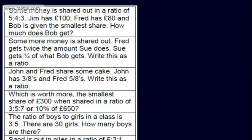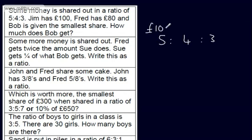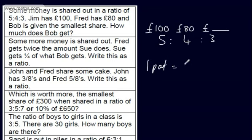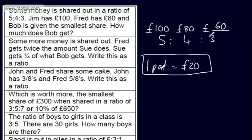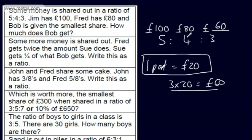Let's look at some word-based problems. Some money is shared out in a ratio of 5 to 4 to 3. Jim has £100, Fred has £80, and Bob is given the smallest share. How much does Bob get? If I write this as a ratio — 5 to 4 to 3 — and put above it what each part is: £100, £80, and we're trying to find this value. Consider that 5 parts is £100 and 4 parts is £80, so 1 part is equal to £20. All we need to do is 3 times 20, which gives us £60. So Bob gets £60.